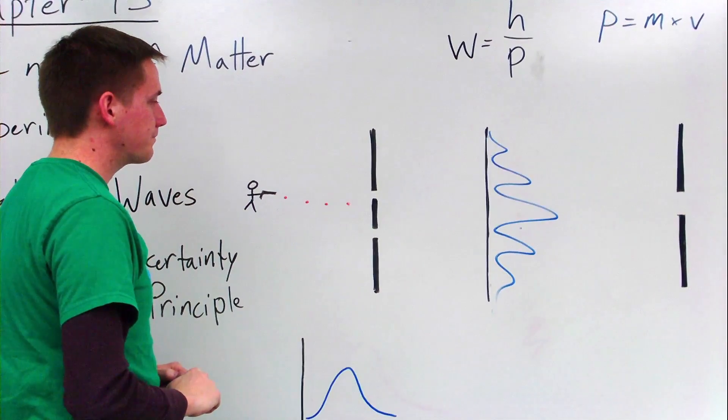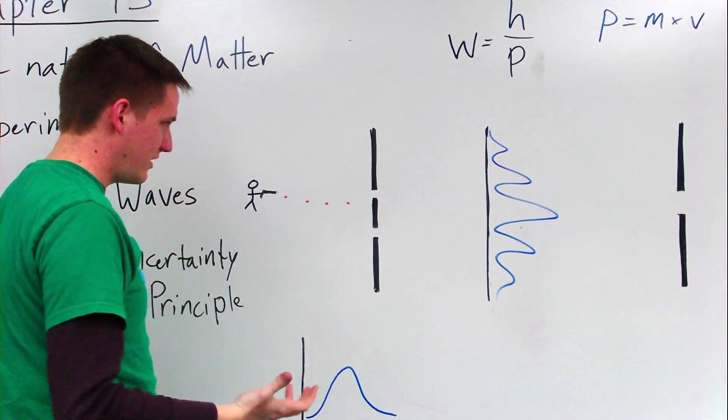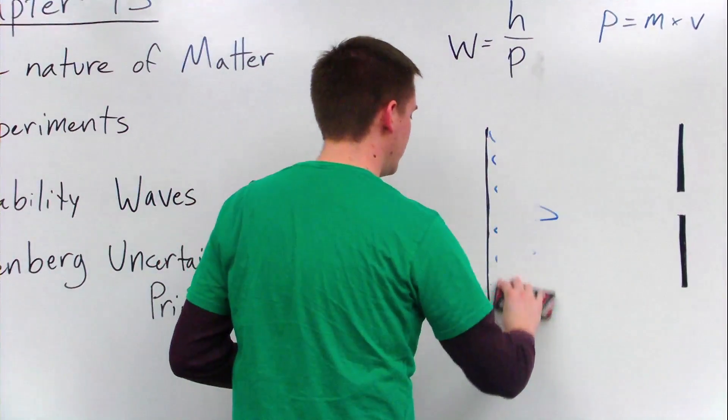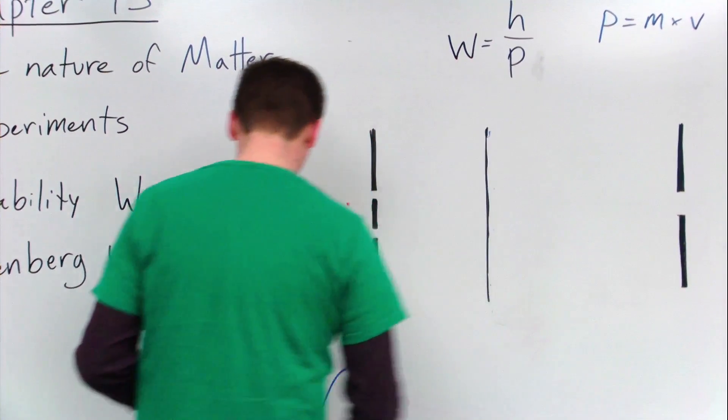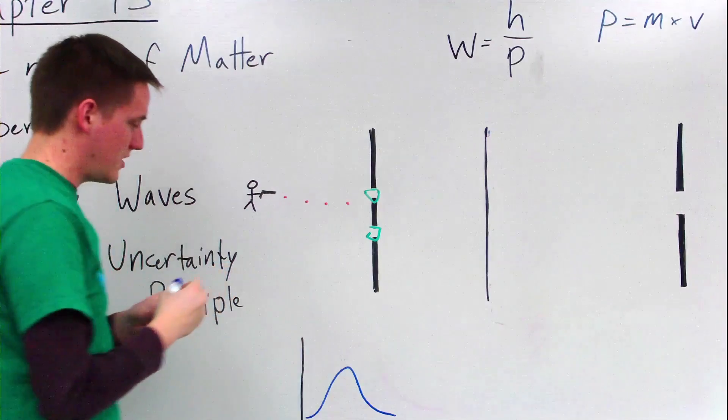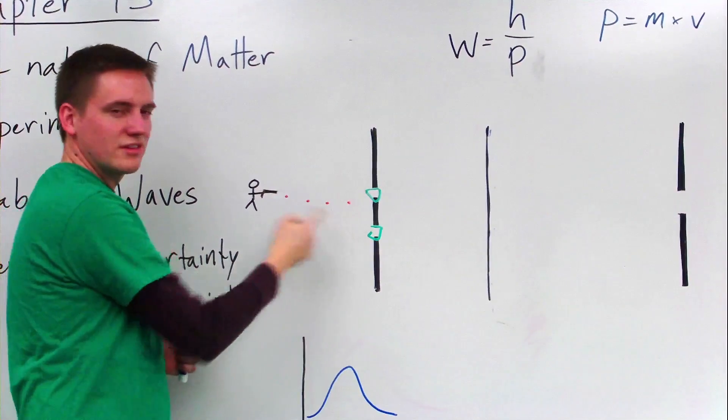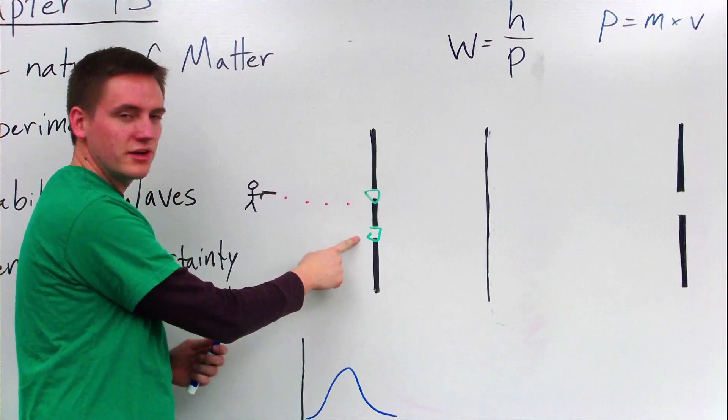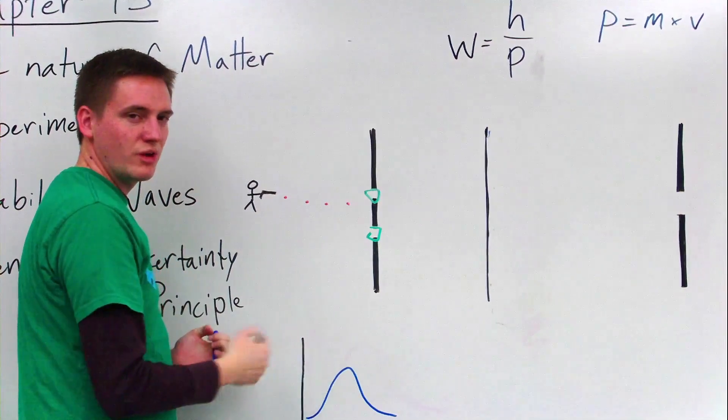Scientists wanted to find out even more and figure out what was going on. So what they did next in their experiment was they put a little detector on the slits, just to try to measure to see which slit the electron was going through, one at a time.